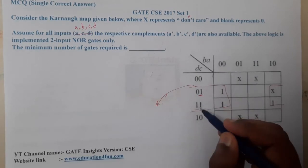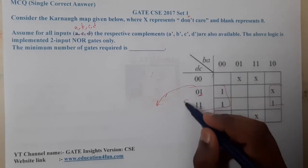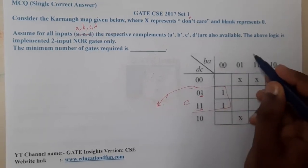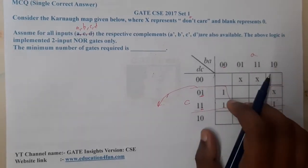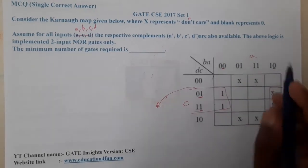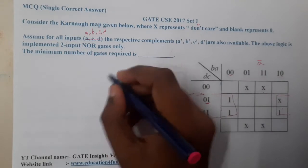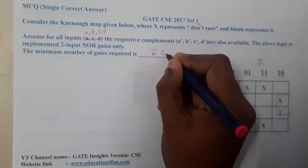If you observe carefully, 1 is common, so that corresponds to c. And in this, both zeros are common, and that zero corresponds to a. So what is it exactly? It corresponds to a' because it is a zero. So it is nothing but a'c.